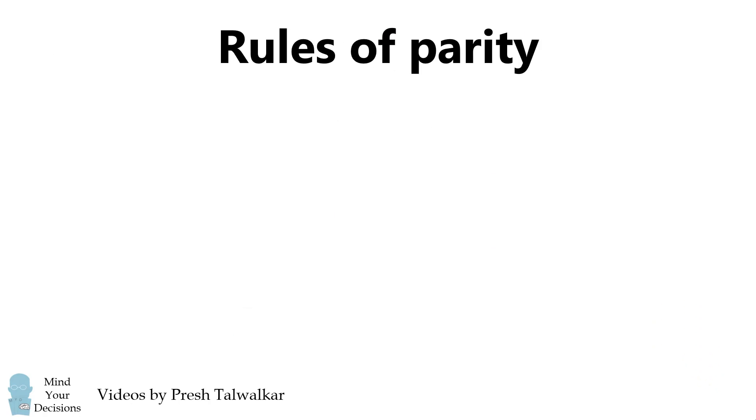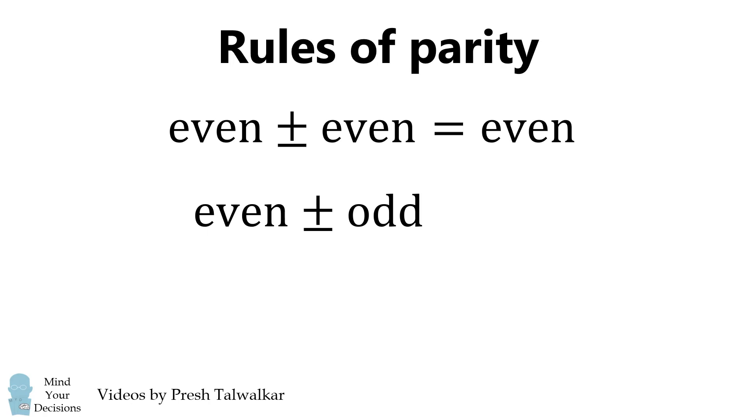Recall the rules of parity. An even number plus or minus an even number will always be an even number. An even number plus or minus an odd number will always be an odd number. Finally, an odd number plus or minus an odd number will always be an even number.